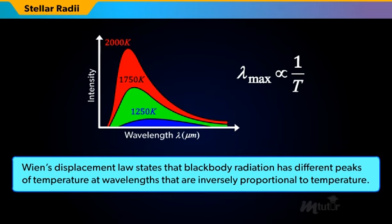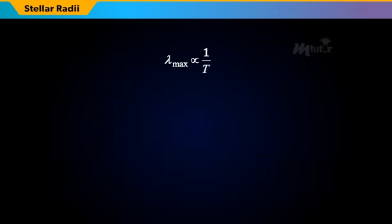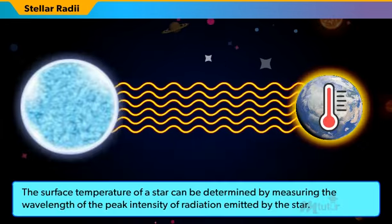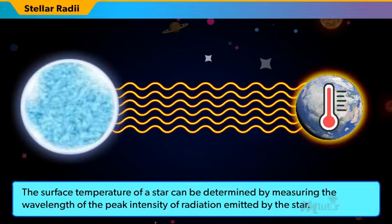Wien's Displacement Law states that blackbody radiation has different peaks of temperature at wavelengths that are inversely proportional to temperature. Mathematically, lambda max is proportional to 1/T, which can be written as lambda max = B/T, where Wien's Displacement Constant B equals 2.898 × 10⁻³ meters Kelvin, and T is the temperature in Kelvin. Therefore, the surface temperature of a star can be determined by measuring the wavelength of the peak intensity of radiation emitted by the star.